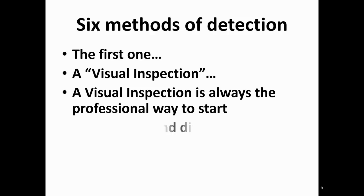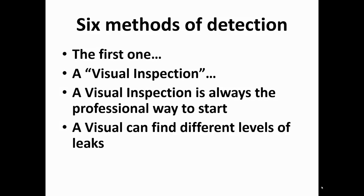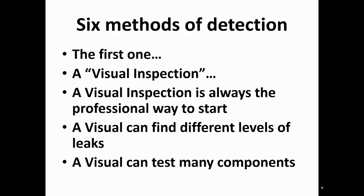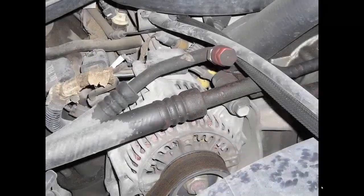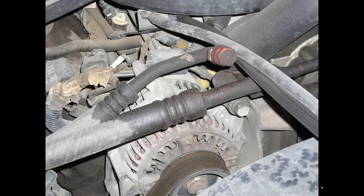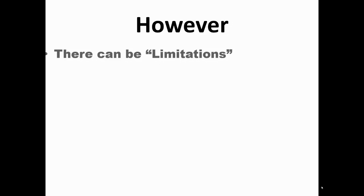A visual inspection can find different levels of leaks, and we're going to identify the three major levels of leakage that can occur on the refrigeration system. A visual can test many components. It can be that easy. But there are limitations, and you have to understand the limitations.